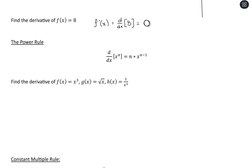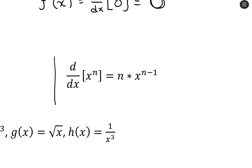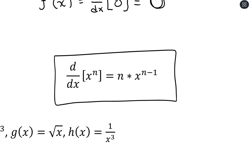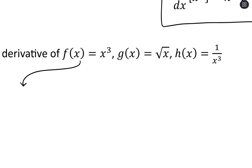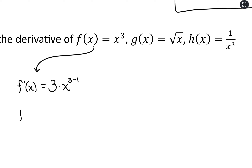Next up, the power rule. When we have x raised to an exponent of n and we want to take the derivative, that's going to equal taking that exponent n, bringing it out front to multiply, and then decreasing the exponent by one. So for f(x) = x cubed, what we're going to do is bring the three out front, multiply with x, and decrease that exponent by one. Our derivative function is going to be 3x squared — exponent goes up front, bump it down by one.